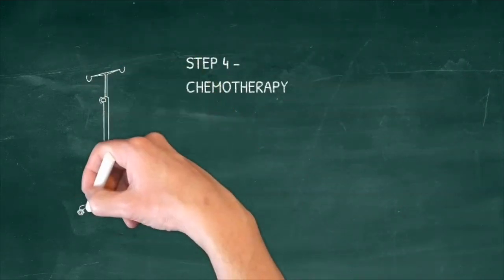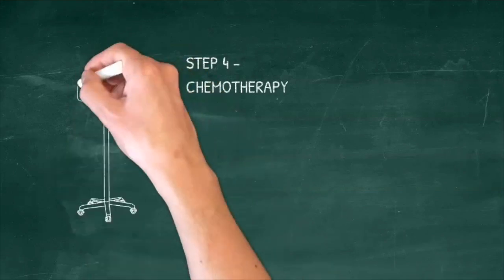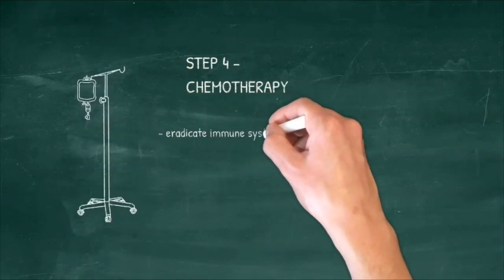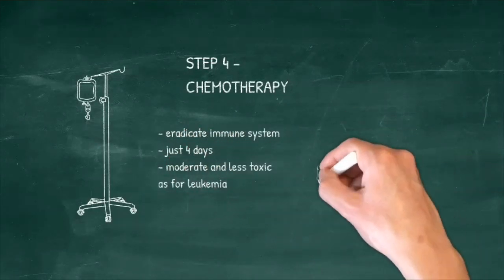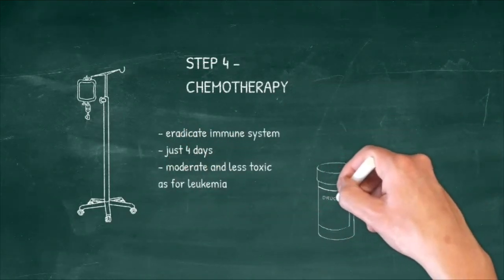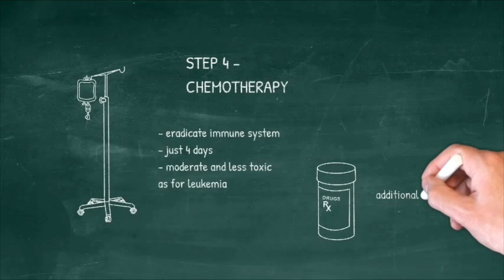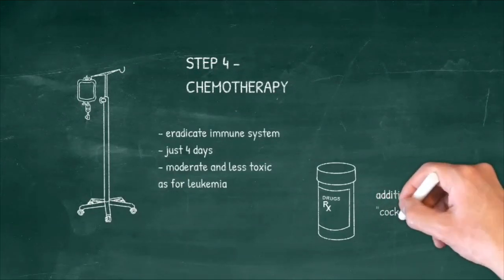Then there comes the toughest step: chemotherapy. The patient's immune system has to be eradicated. It takes just 4 days and it's moderate and less toxic than used for leukemia, for example. A cocktail of antiviral, antibacterial, and antifungal prophylaxis accompanies the procedure.